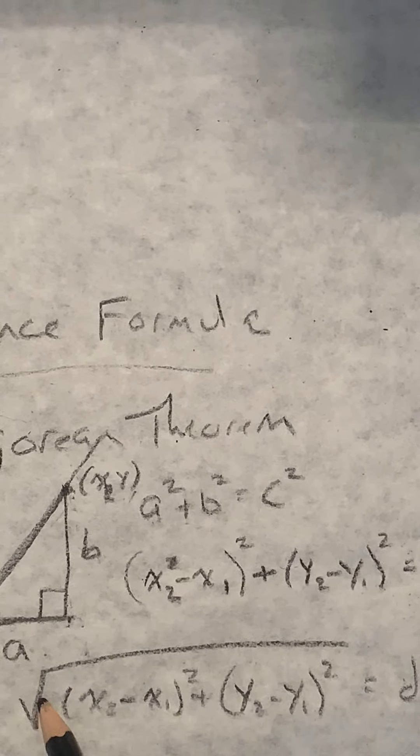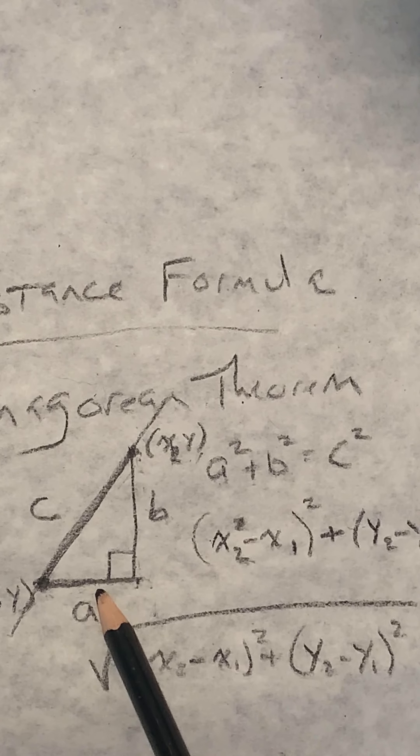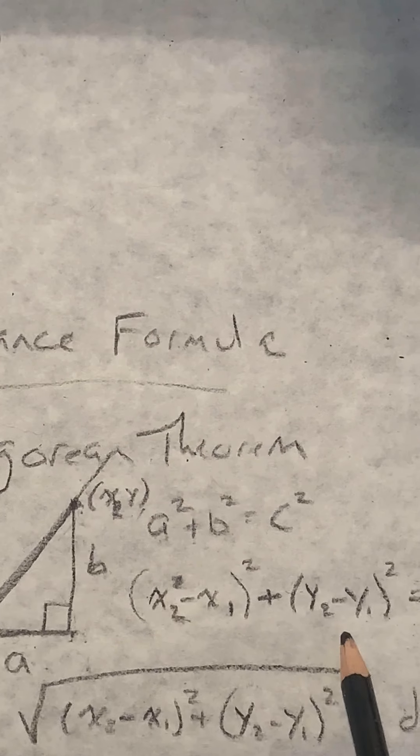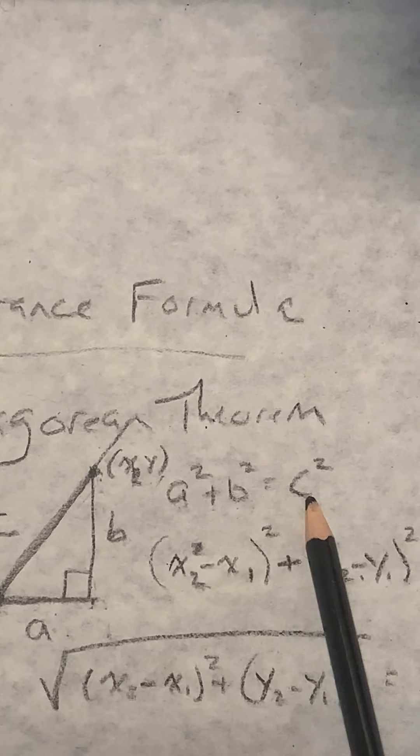That's why you see it like that, because to get this length here, we have to subtract our X coordinates. To figure out what this change is, we have to subtract our Y's. And using Pythagorean theorem, we know it's A squared plus B squared equals C squared.